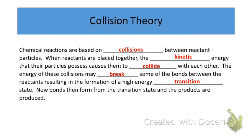The overall idea is that chemical reactions are based on collisions between reactive molecules. When reactants are placed together, the kinetic energy these particles possess causes them to collide. Some of these collisions will break chemical bonds between the reactants, resulting in what is known as a high energy transition state. This transition state is created during the course of the reaction, in between the reactants and the products, where new bonds are forming and old bonds are breaking.